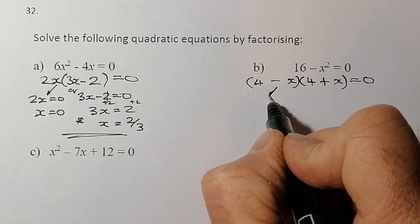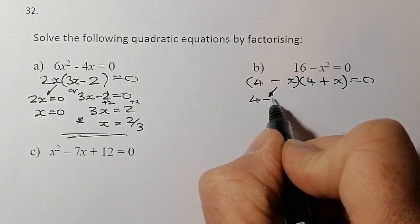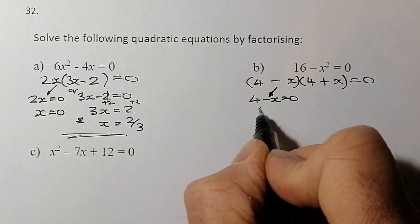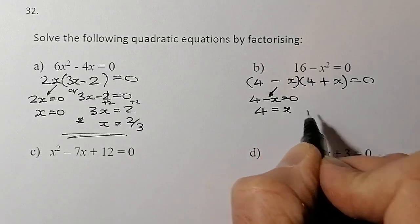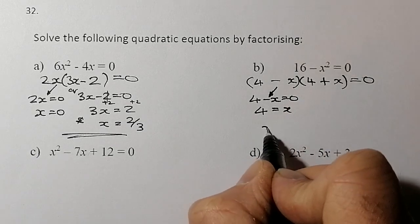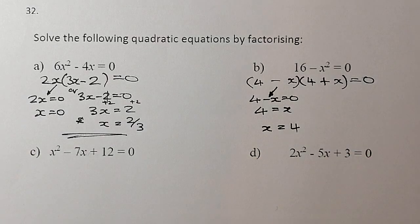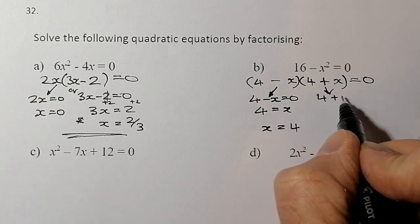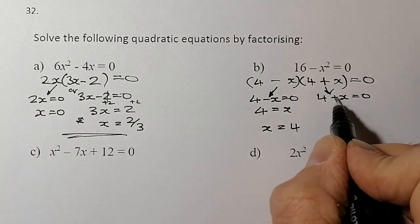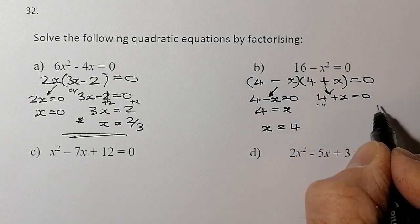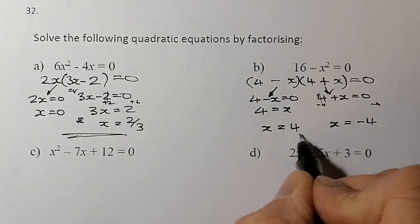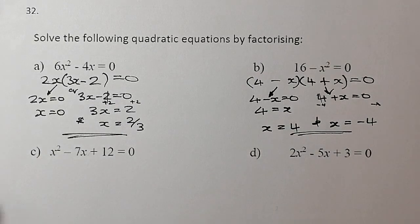From the factorized form, I find my solutions. From (4 − x) = 0, adding x to both sides gives x = 4. From (4 + x) = 0, subtracting 4 from both sides gives x = −4. So the two solutions are x = 4 and x = −4.